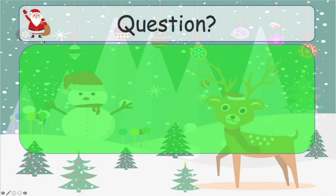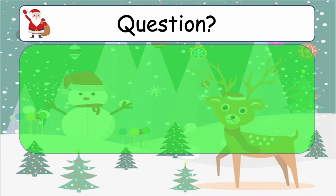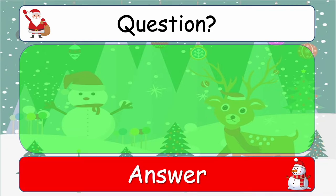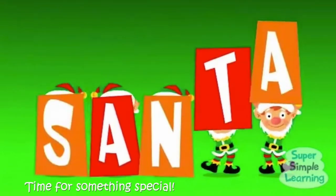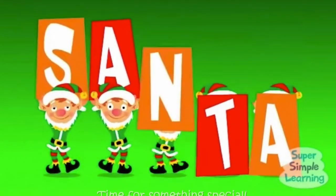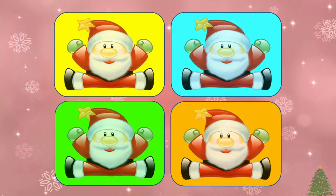Let's choose number one. As always, this is a template. Please write in your question and put a picture into the green rectangular box, or whatever you want — a translation, scrambled words. Click the mouse or push the space bar to reveal the answer, then click again. Question number one — time for something special. What could this special thing be? It is the choice slide.